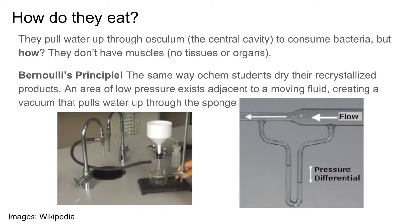As a chemical engineer, we know about Bernoulli's principle, which tells us that in a flowing fluid there must be a pressure difference — fluid flows from high pressure to lower pressure. In organic chemistry labs during recrystallization experiments, turning on a faucet creates a flowing stream of water that generates an adjacent vacuum. Hooking this vacuum up to a flask creates suction to pull solvent through and dry out crystals. Sponges use this exact same principle: flowing water above them generates a vacuum, pulling water from the high-pressure area beneath the sponge up through the osculum.